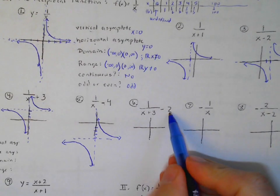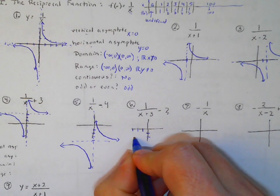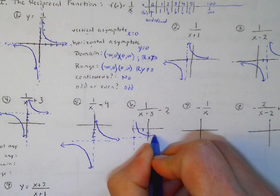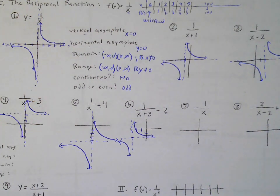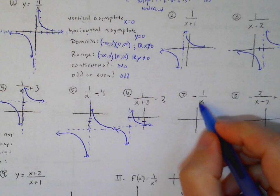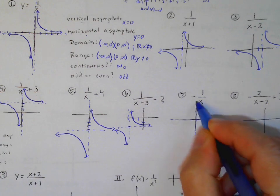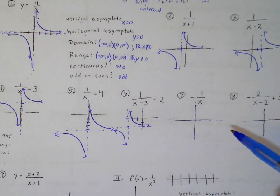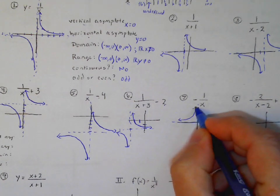For another example with a shift of positive 2, my asymptote would be here and here. Remember, the asymptotes are not really part of the graph — they're just guides for where our graph goes. If we shift down two and left three, the asymptotes move accordingly, giving us a guide for where the graph is.